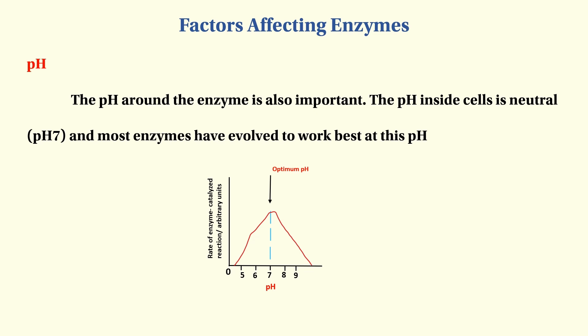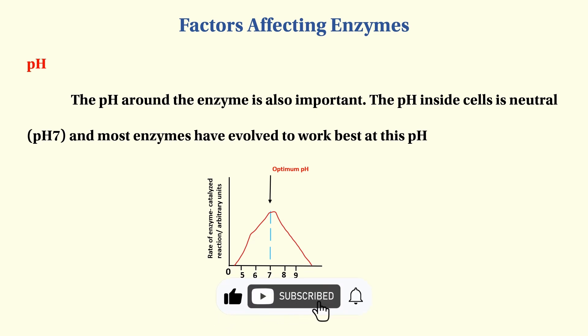To summarize: an enzyme is a type of protein that controls the rate of reaction. Enzymes do not react with the substances they act upon permanently. Please note that enzymes do not get used up in the reaction.